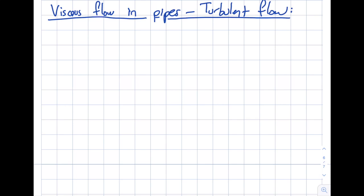In this segment we are going to talk about viscous flow in pipes. In the earlier segment I talked about laminar flow, and today I'm going to talk about turbulent flow. In fact, we will converge these two segments into one constructive figure that you will be able to use for all laminar, turbulent, and transitional regimes.